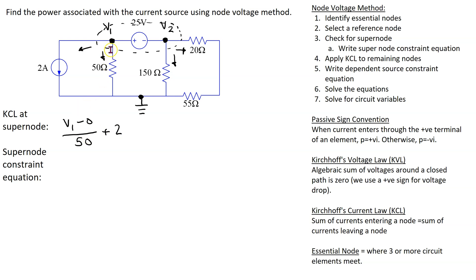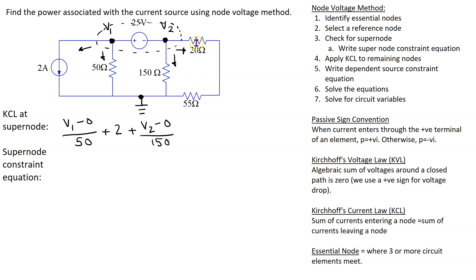Now we move to the other side of the super node and continue applying Kirchhoff's current law. The branch current through the 150 ohm resistor is v2 minus 0 over 150. The remaining two resistors are in series, so we exploit this fact and apply Ohm's law to get v2 minus 0 over 75, and the sum equals zero.